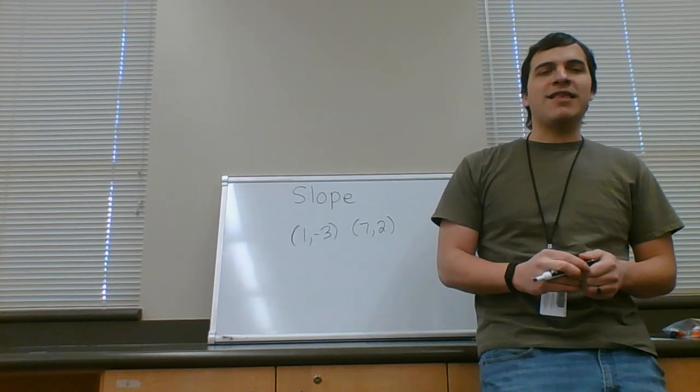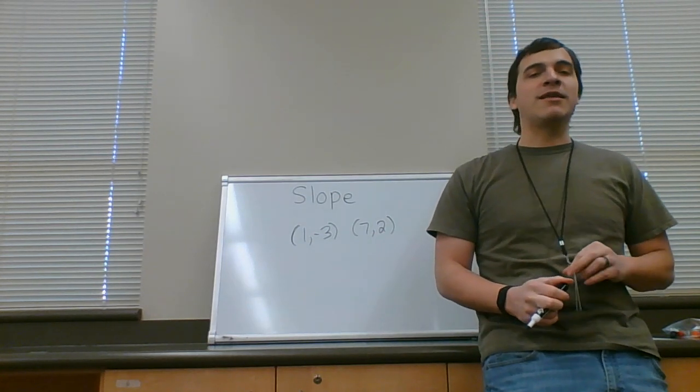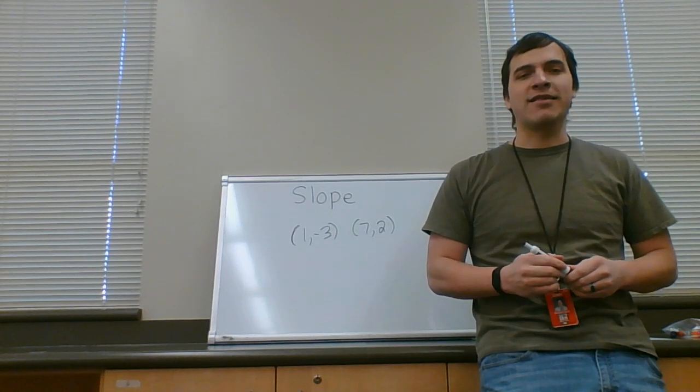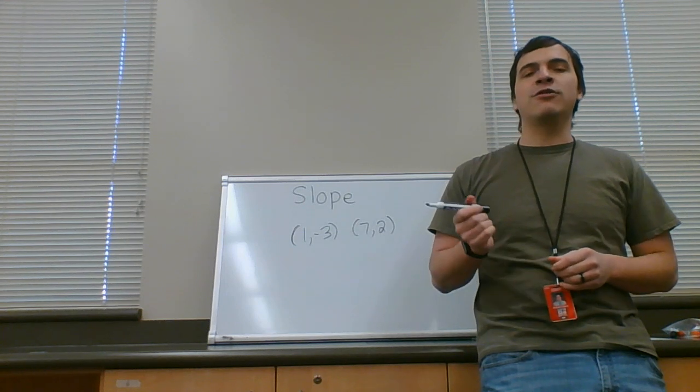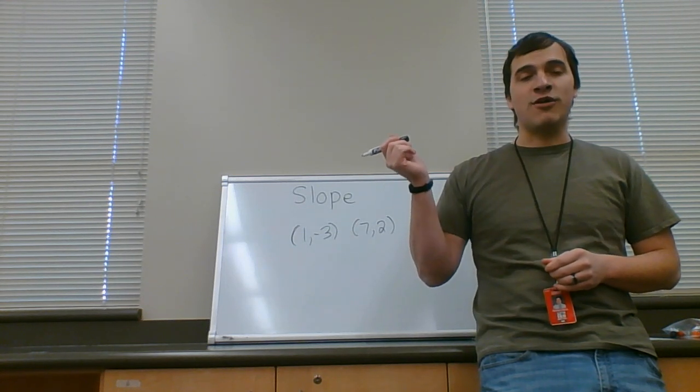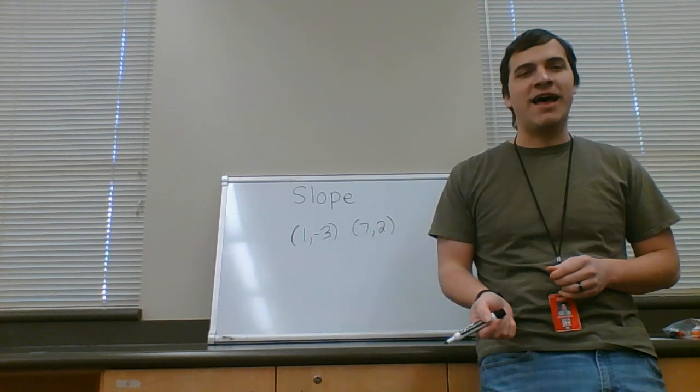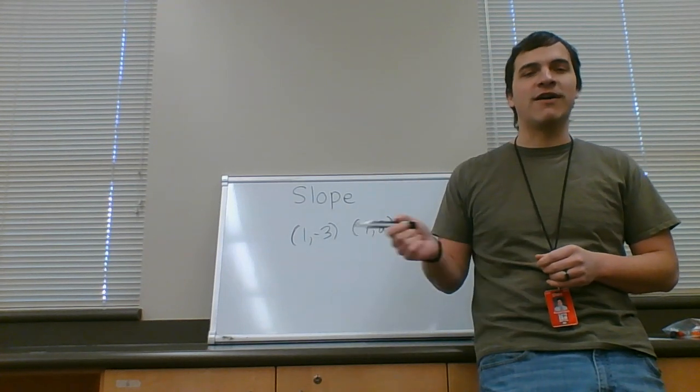There are a few methods to do this type of problem. One method we did last time, in the previous video and the delta math assignment, is that you had to graph the line, then graph the two points, then made the line, then count the slope triangle to find the slope.